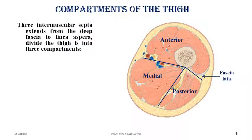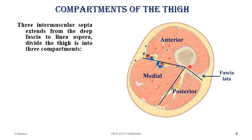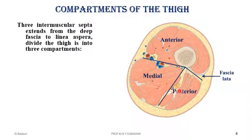The thigh is divided by three septa extending from the fascia lata — the deep fascia of the thigh — to the linea aspera on the back of the femur. These are the medial, lateral, and posterior septa, dividing the thigh into anterior, medial, and posterior compartments.